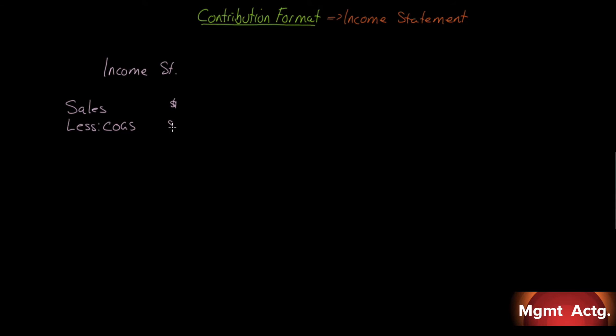So income statement, we start with sales, less cost of goods sold, and we get what's called the gross margin. This is very useful to determine whether or not our purchasing is efficient. Less our expenses. We have selling expenses. We have administrative expenses.